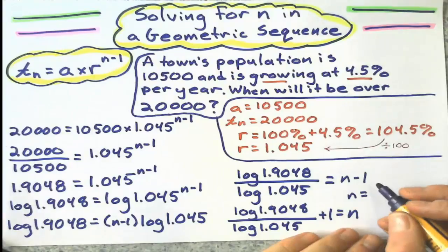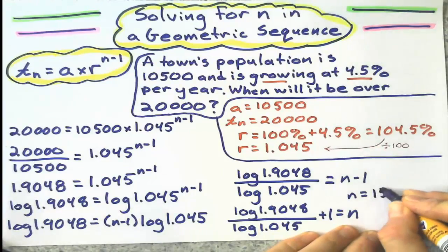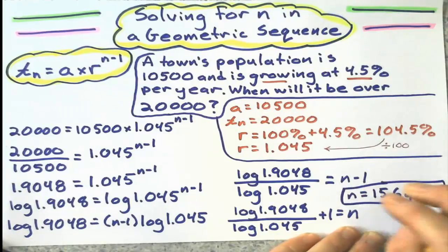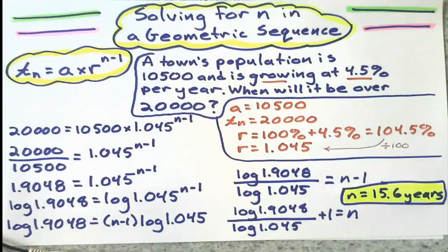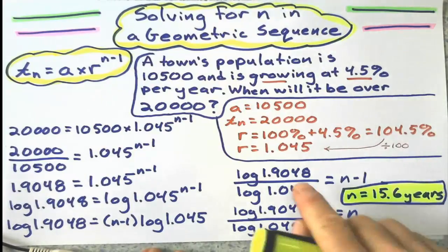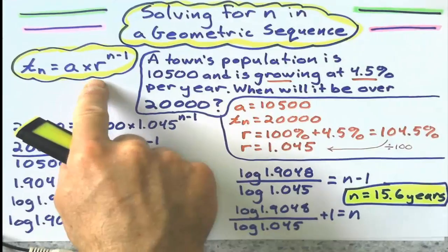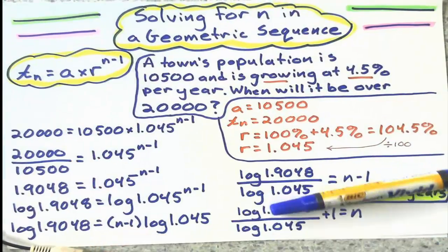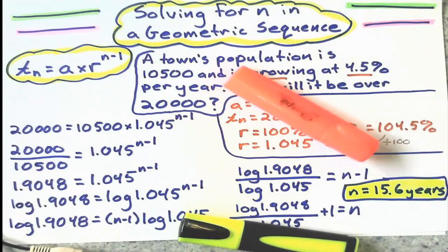So we should get, if we do this correctly on the calculator, about 15.6 years is when that population will hit about 20,000. And that's how you solve for n in a geometric sequence of a general term. Good stuff. Alright. Good luck, everyone. Pack it up.